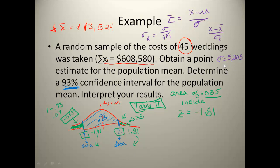So now I can use my information to find my sigma sub x-bar. So if I come down here and I do sigma of x-bar, it's going to be equal to that 5,205 divided by my square root of n. Now remember, n is your sample size, so it would be the 45. When I go ahead and divide that out, I end up getting 775.9.